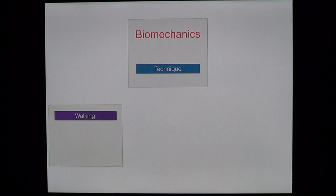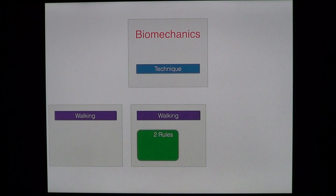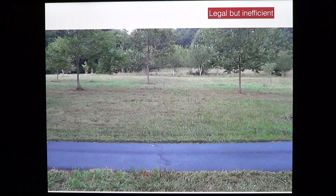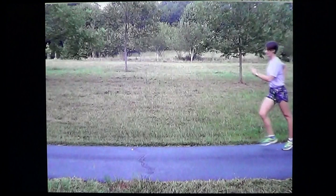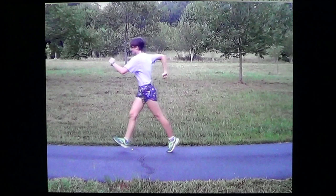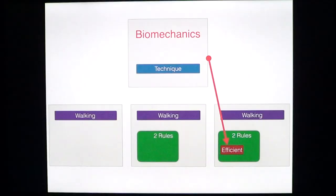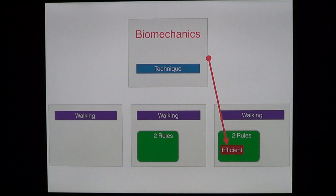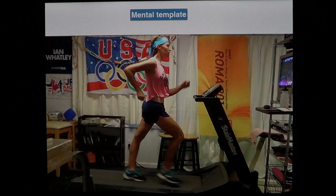Walking consists of a very large number of different possible bipedal actions; however, race walking has two rules and so forms its distinct subset of walking. This athlete is within the rules of race walking — she's landing on a straight leg and keeping contact with both feet. However, if you watch her center of mass, look at the top of her head, she's wasting a lot of energy by going up and down. So we need to focus within the two rules on making the athlete efficient if they're going to race fast.